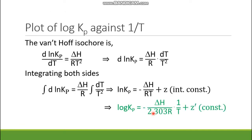Now we have to plot log Kp against 1/T. Starting from the Van't Hoff isochore equation, d ln Kp/dT = ΔH / RT², which is a very important equation that you have to apply in most numerical problems. We rearrange to: d ln Kp = (ΔH / R) · dT / T².